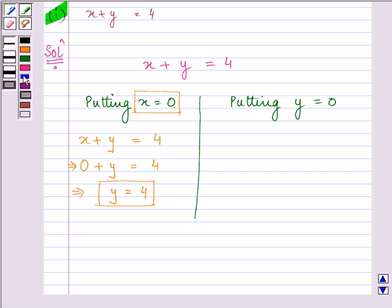Similarly, x plus y is equal to 4. We will substitute the value of y as 0 now in this given equation and we have the value of x as 4. These are the two points which we have found out.